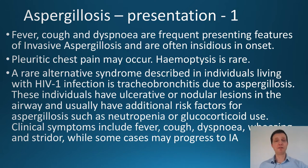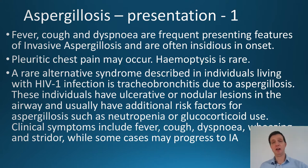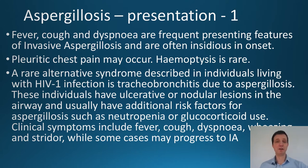How does it present? Well: fever, cough, and difficulty breathing. Those who watched my last presentation on the Covid-2019 lung infection which broke out in China will recognize that fever, cough and difficulty breathing is exactly how that presents too — there are many different things that present with fever, cough and difficulty breathing.